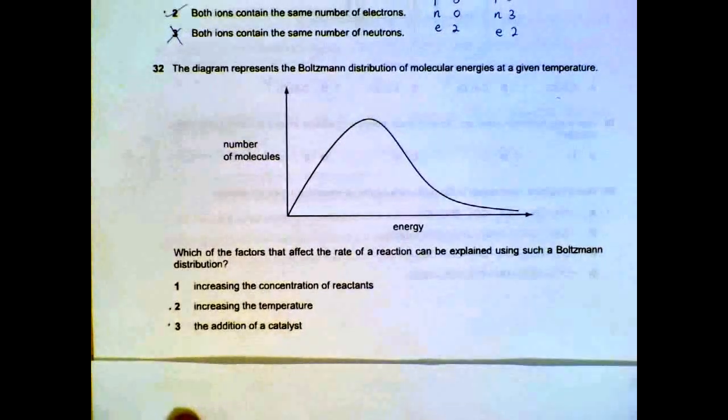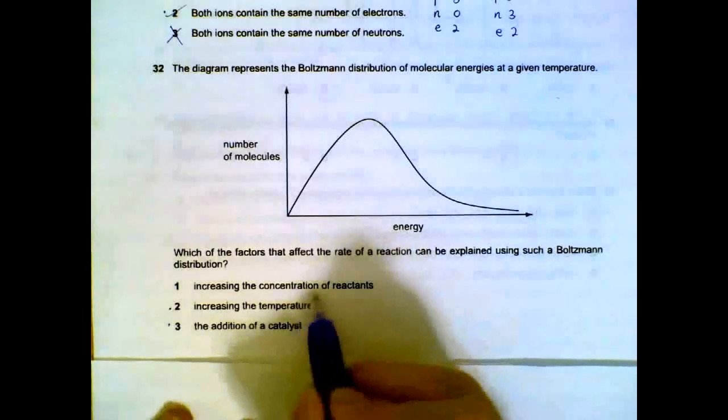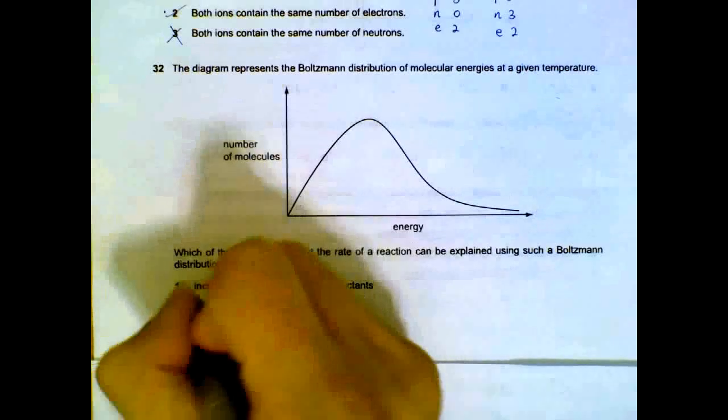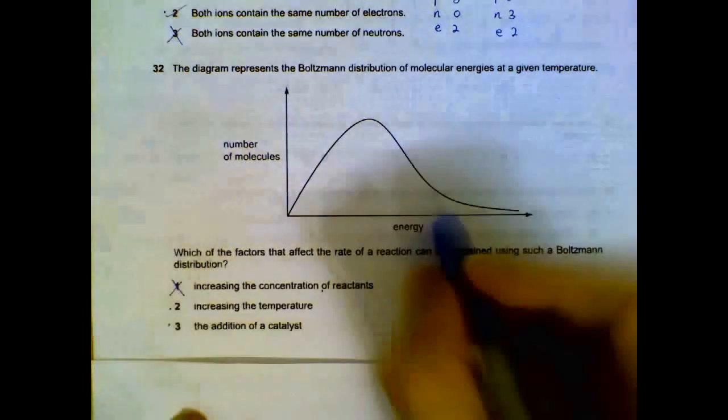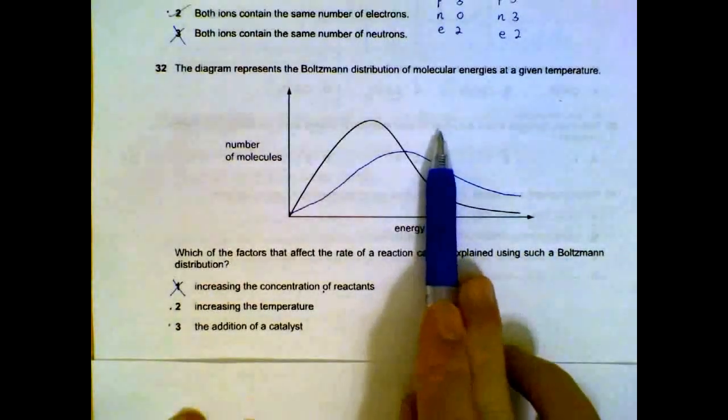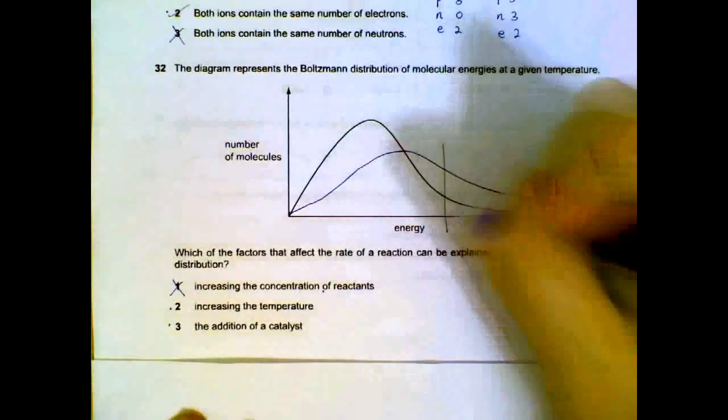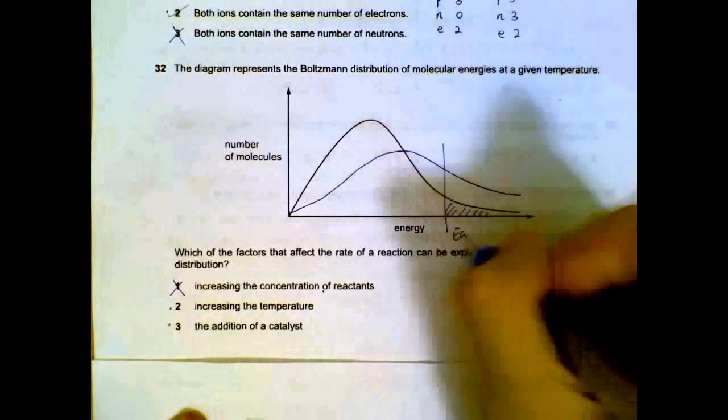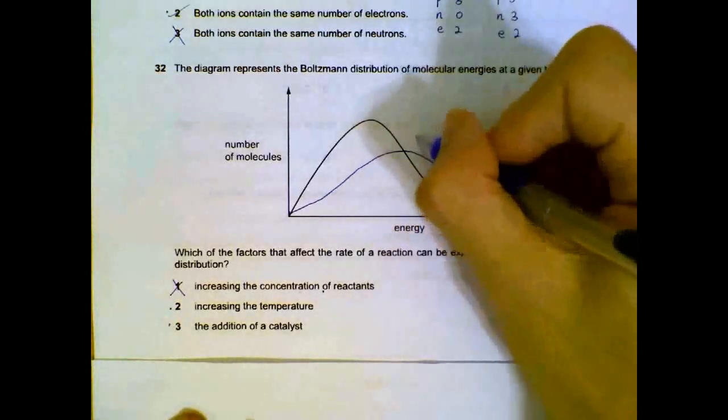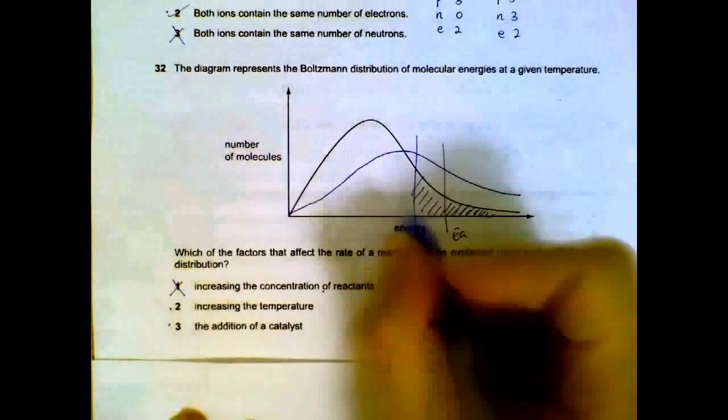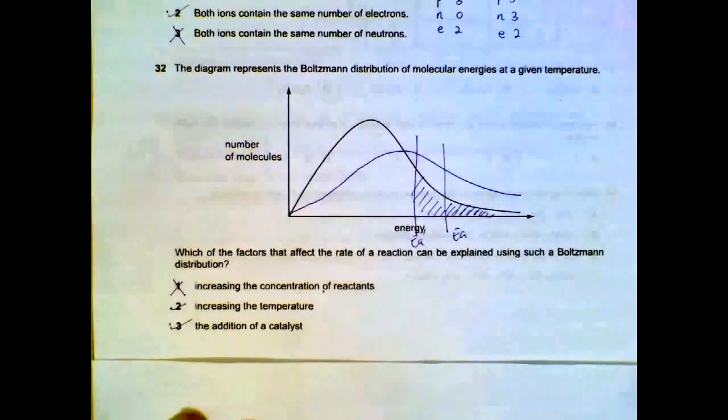Question 32. What are the factors that affect the rate of reaction that can be explained using a Boltzmann distribution? Increasing concentration will not be reflected here because it will not change the distribution of energy, which is dependent on temperature. So statement 1 is out, statements 2 and 3 must be correct. Increasing temperature, you will have a higher portion of particles with the minimum amount of activation energy. Addition of catalysts: with a catalyst your activation energy is lowered. You will have a larger portion that has the minimum activation energy. So we can use Boltzmann distribution to explain increasing temperature and using catalysts.